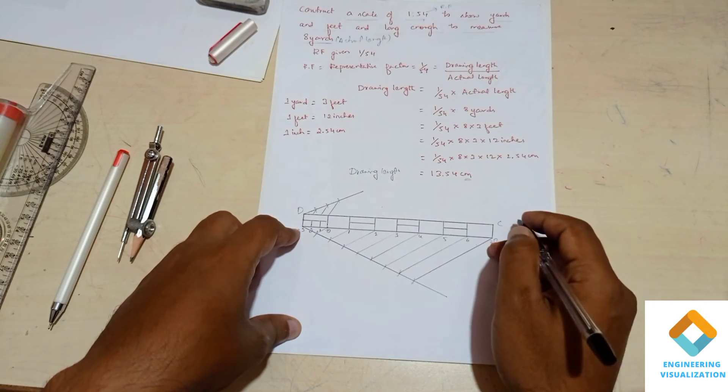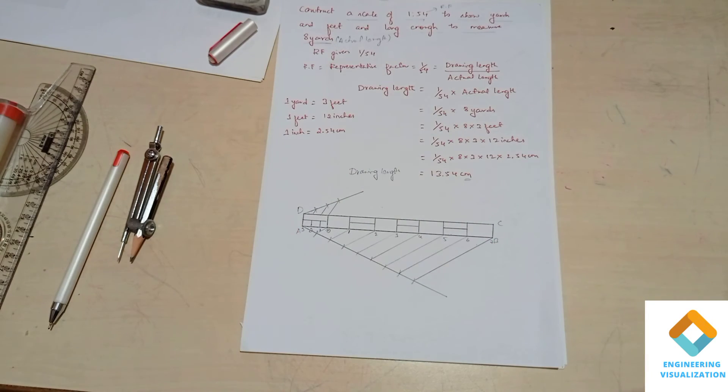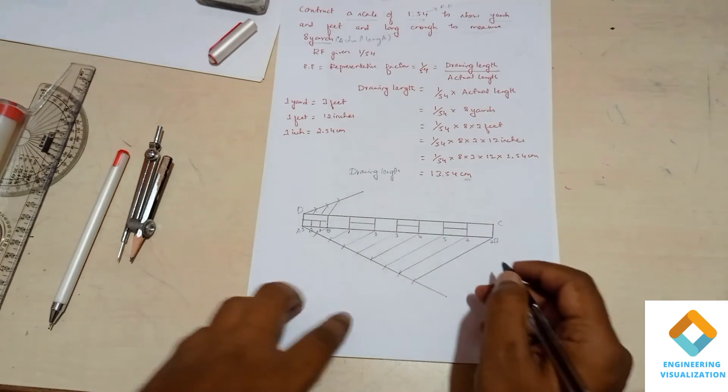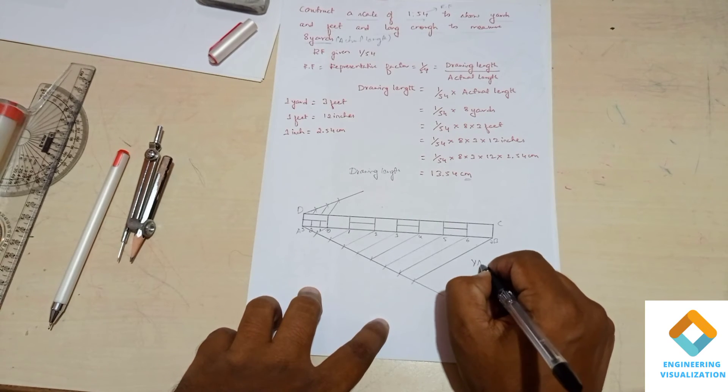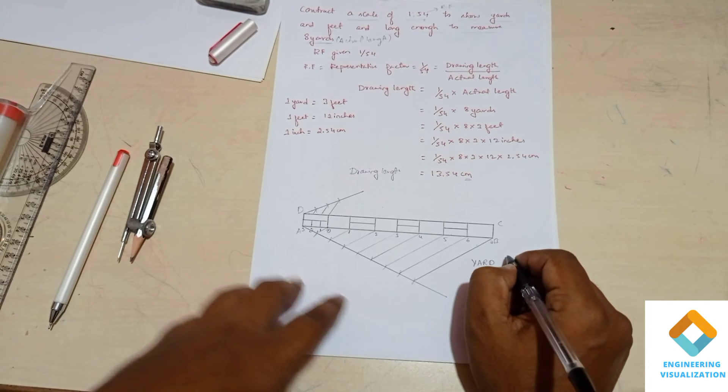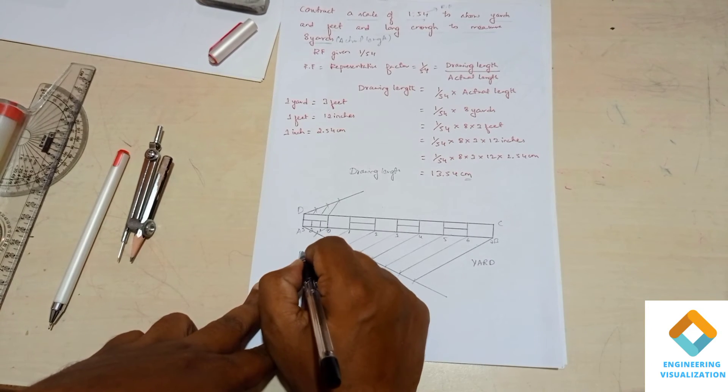Now we can show one example as a length here. I'll mark here. So here we can write this as yard, and here we can write this as feet.